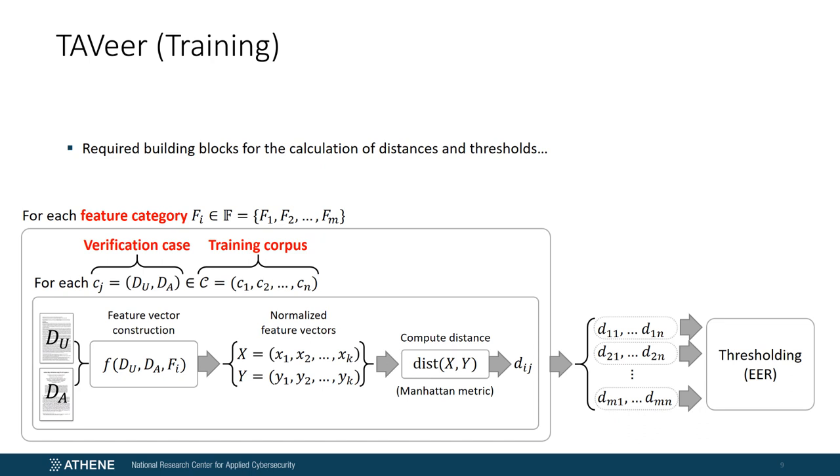That was the big picture, and now we take a closer look at the inner workings of the method. First, we have to calculate for each involved feature category F_i the distances with regard to all verification cases in the training corpus. The resulting distances are required to determine the thresholds for the respective feature categories. So how do we do that? Given F_i, we construct for the unknown and known documents within a verification case the corresponding feature vectors X and Y, where depending on F_i, a single feature denotes the absolute frequency of a punctuation, word, or phrase in a document. Then both vectors are normalized by the Manhattan norm, so that each vector sums up to one. Afterwards, we calculate the distance between both vectors using the Manhattan metric. At the end, we get n distances for all M feature categories, which represent the input for the thresholding procedure.